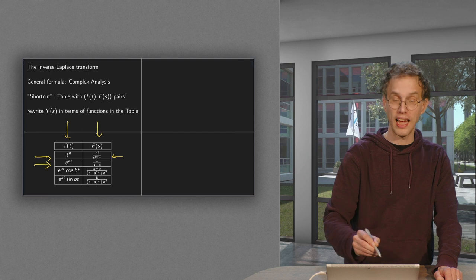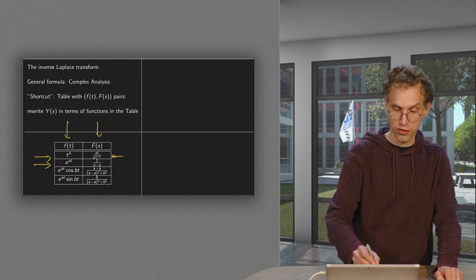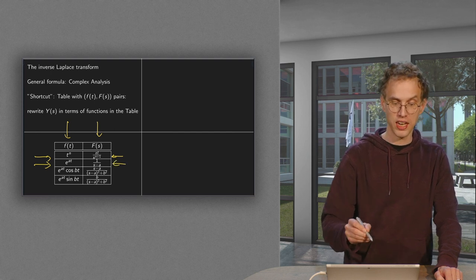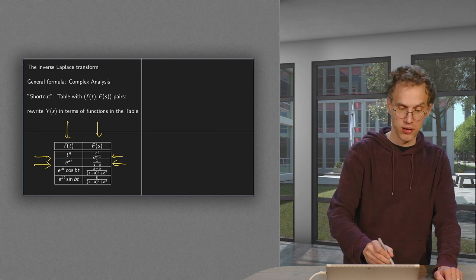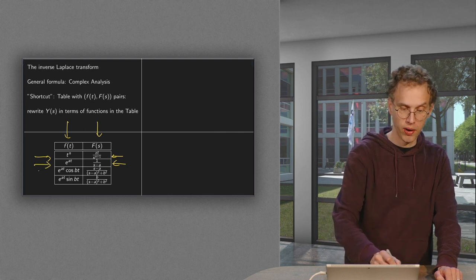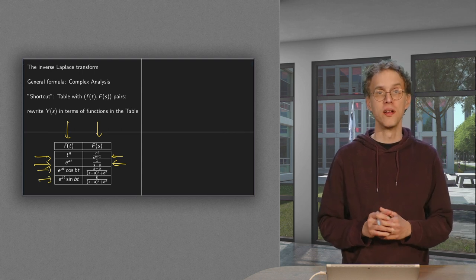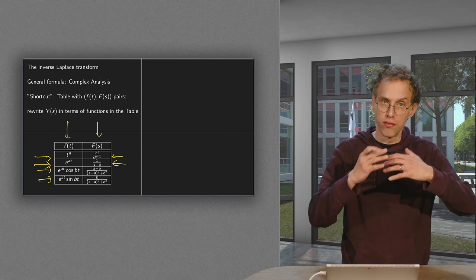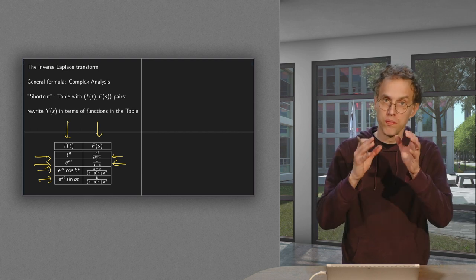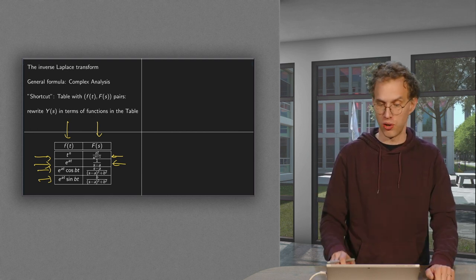We have done e to the power at. The Laplace transform turns out to be 1 over s minus a. And we have done the sine and the cosine. And you can easily include the e to the power at to get those Laplace transforms over here. And if we go further we will make the table slightly longer but not much longer.